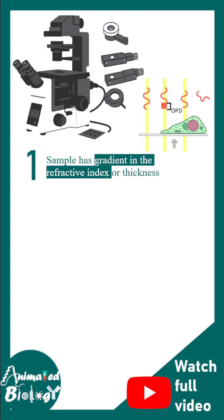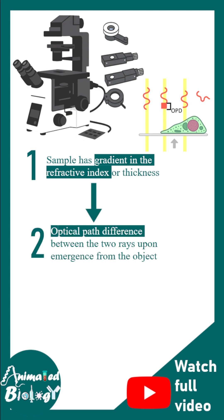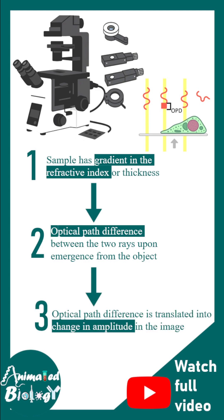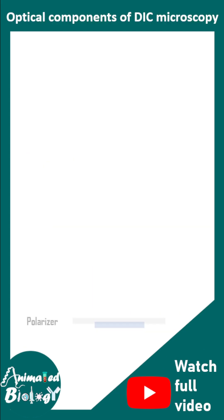It works based on three principles: the sample has to have a gradient of refractive index or thickness, which translates into an optical path difference. This optical path difference ultimately creates a change in the amplitude of the image, and that creates the pseudo-3D image that we see in DIC.